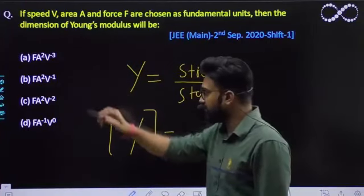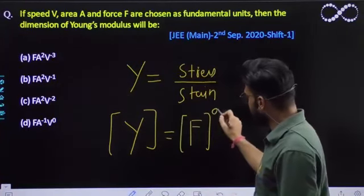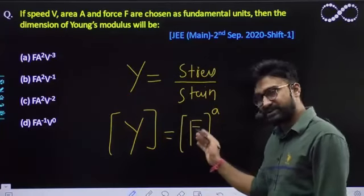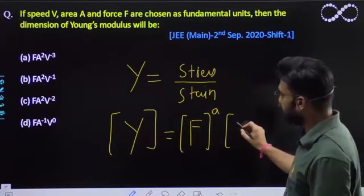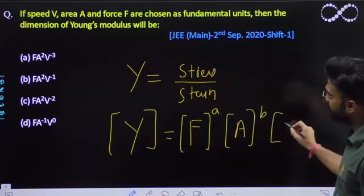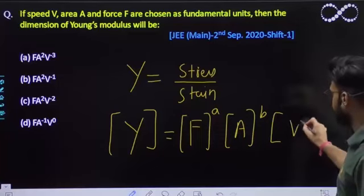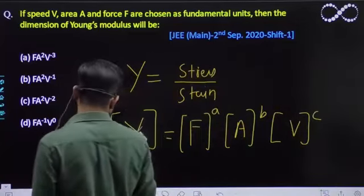Is equal to - in the terms of humein kya nikalna hai? Force ke terms mein nikalna hai. Toh iska unit, iske terms mein kis se relation hoga? Let it be a, and then uske baad kiske respect mein nikalna hai - area, let it be b, and speed ke respect mein nikalna hai, let it be c. And yaha par this is Young's modulus.